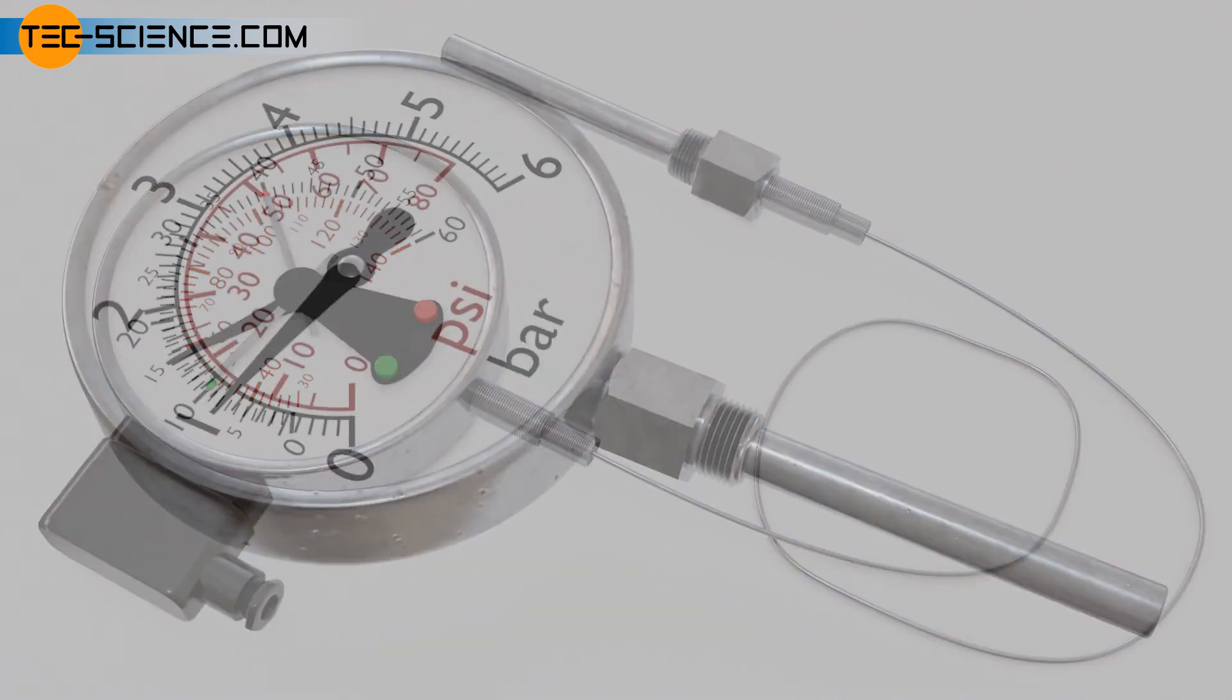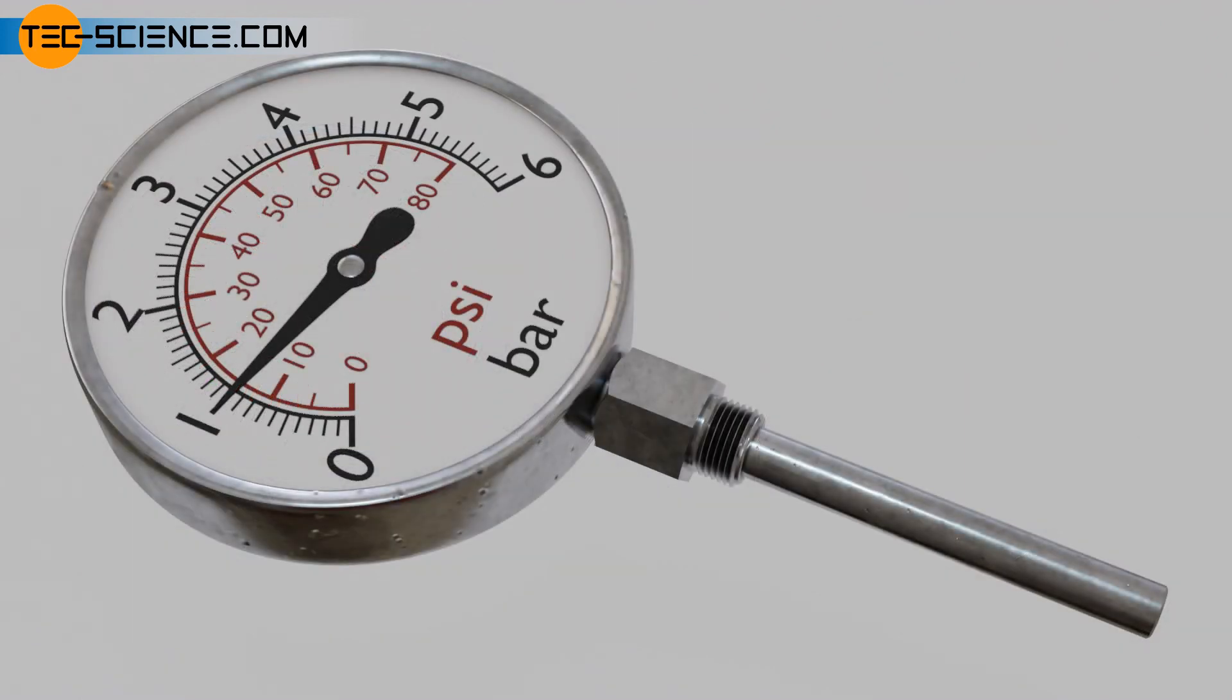Note, pressure gauges work on the same principle as gas-filled thermometers. Instead of a closed measuring tube, an open tube is used, which is inserted directly into the medium whose pressure is to be measured. Instead of temperature values, pressure values are read off the scale.